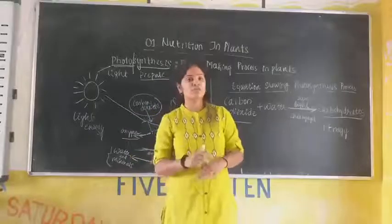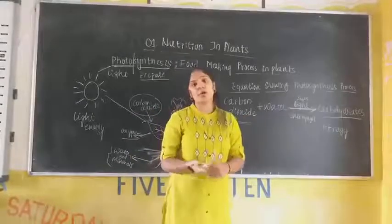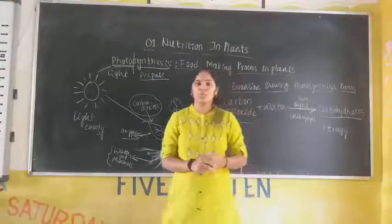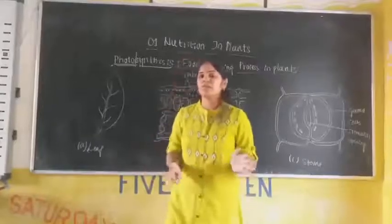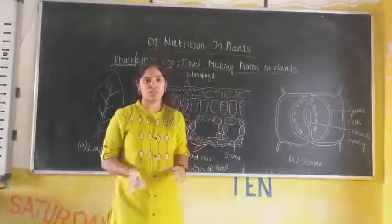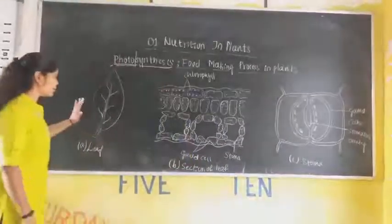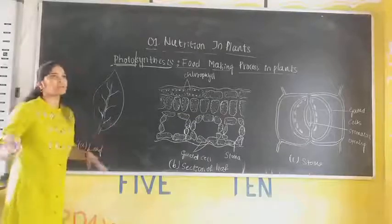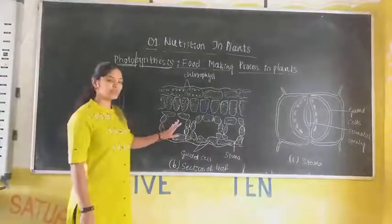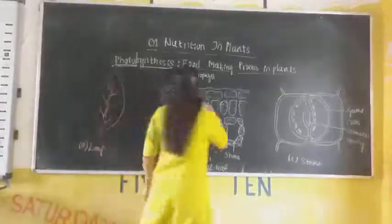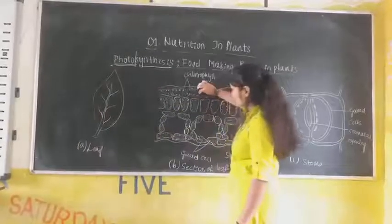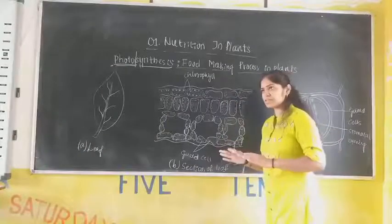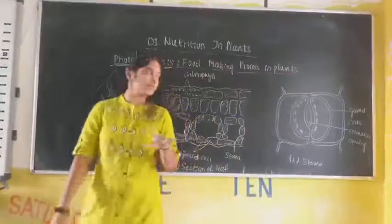Now we are going to study about the section of the leaf — what components are present in the leaf and where the food is prepared. In the leaves only, the photosynthesis process occurs. When this leaf is observed under the microscope, it will look like this. Here we can see the chlorophyll pigment — the green colour pigment — which absorbs the light energy and is helpful for the photosynthesis process.